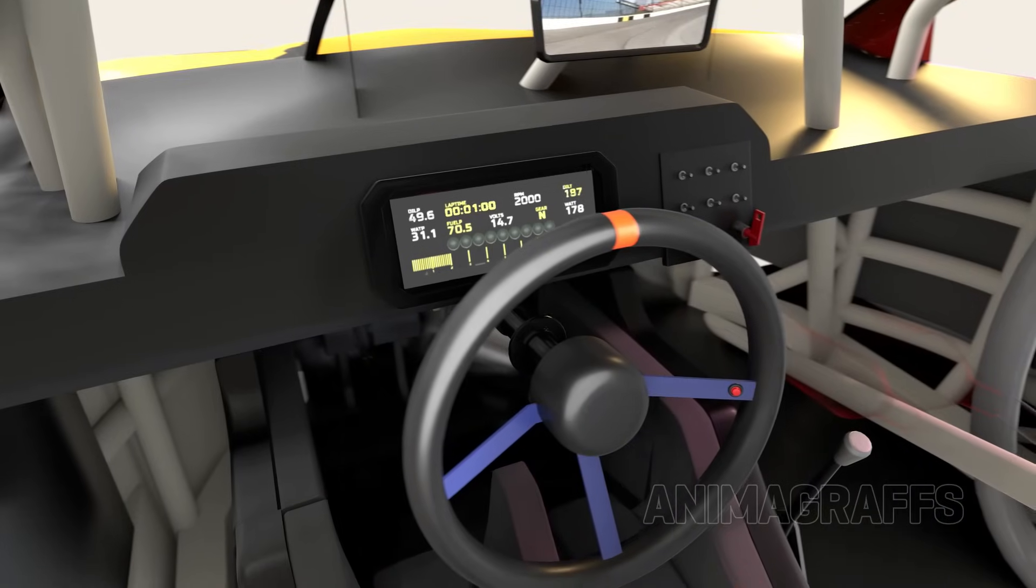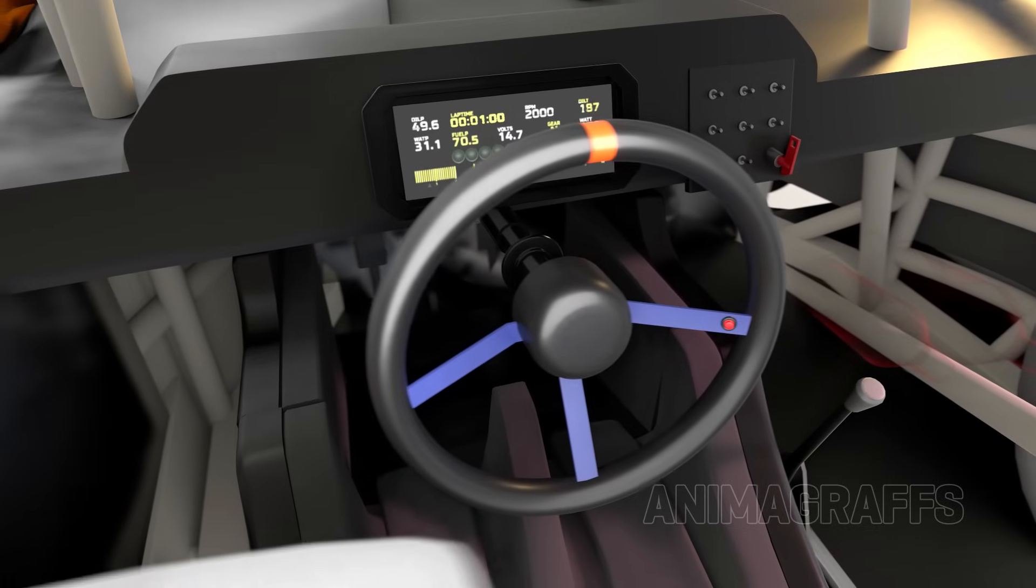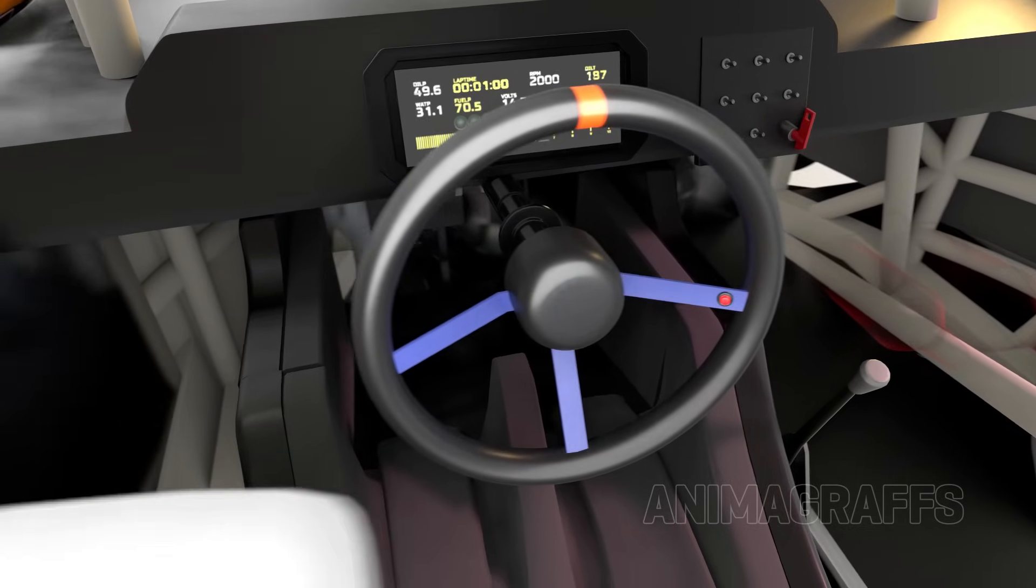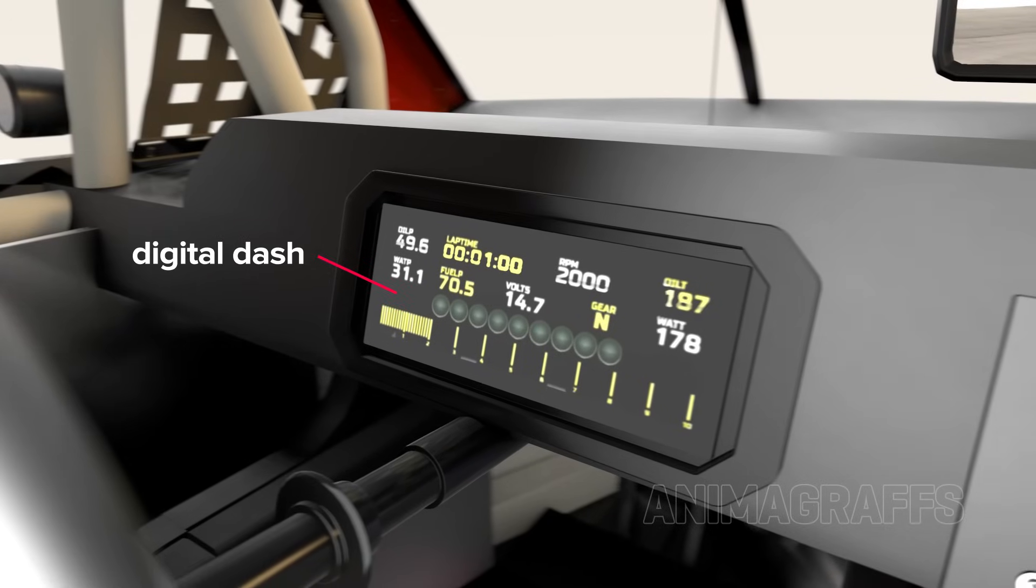The simple steering wheel includes a push-to-talk radio button for communication with the track spotter, to get info on track conditions and race strategy.